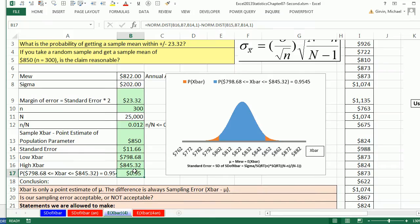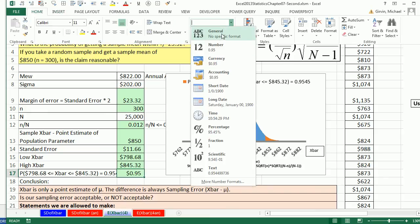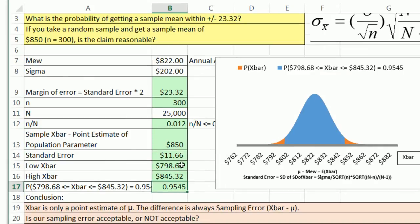It says 95 cents, but we know that's number formatting. I'm going to go up to Home, dropdown for General or Control Shift tilde or Grave accent. So the probability that we could go out and get an x-bar between this lower and upper is 0.95.